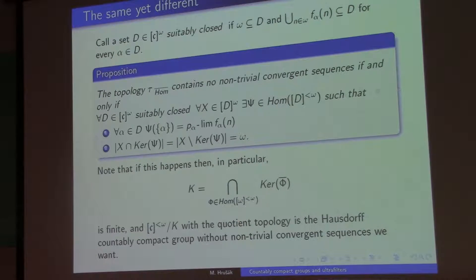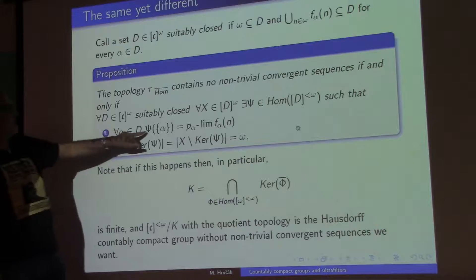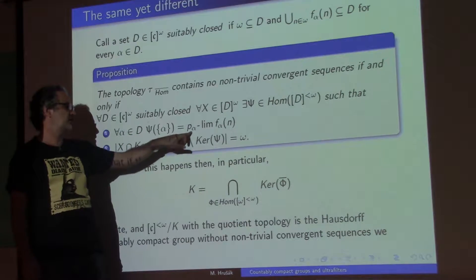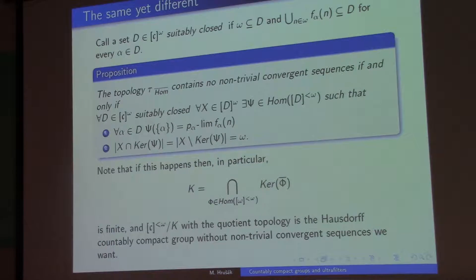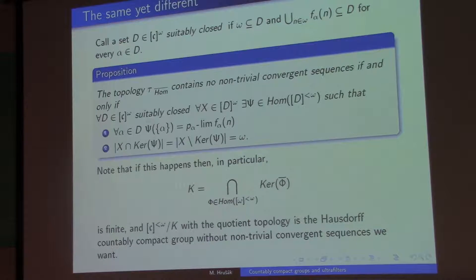And if I can control homomorphisms on these countable sets, then I can always extend them just by the same procedure with these p-α limits to the whole. So this proposition essentially characterizes for which sequences of ultrafilters this construction gives a group without convergent sequences. Well, it just says that locally you can always split sequences by homomorphisms while preserving this fact that the singleton α is this abstract p-α limit of its corresponding sequence. Well, if I do that, then I may still end up with a group which is not Hausdorff.